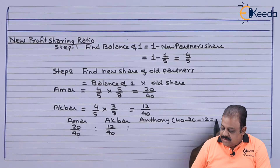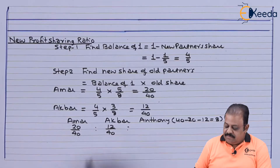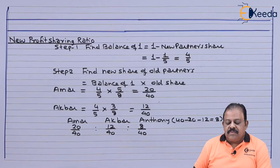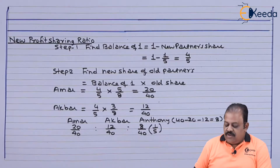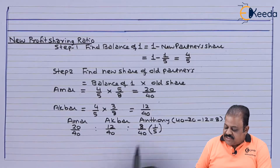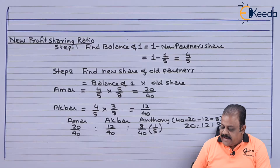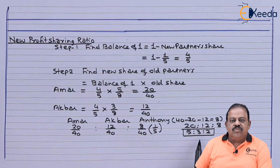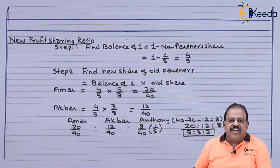Balance remains: 8 parts. Those 8 parts will be given to Anthony. So share of Anthony will be 8/40, which is the same as 1/5 — that is the new partner's share. So we can say that the new profit sharing ratio is 20:12:8, which simplifies to 5:3:2.